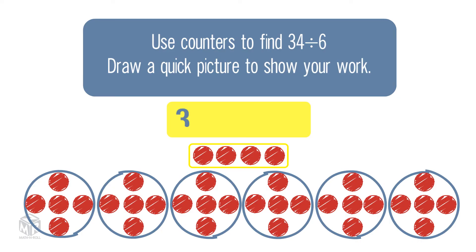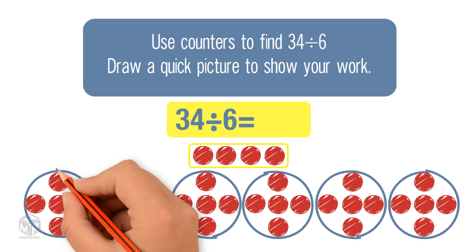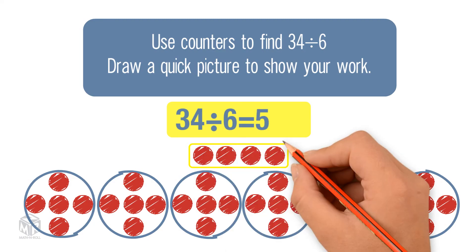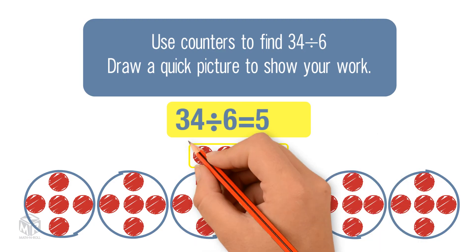So for 34 divided by 6, the whole number quotient is 5 and the remainder is 4.